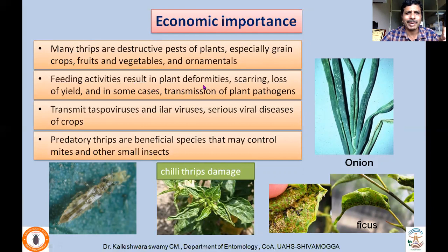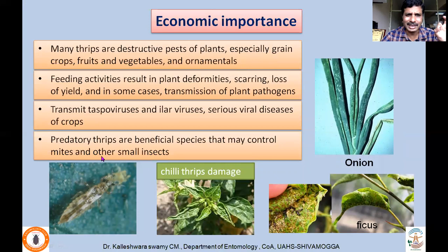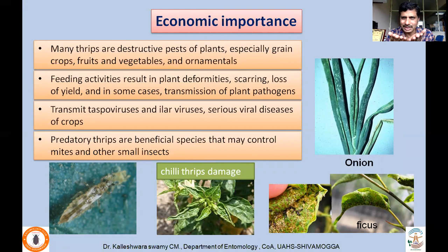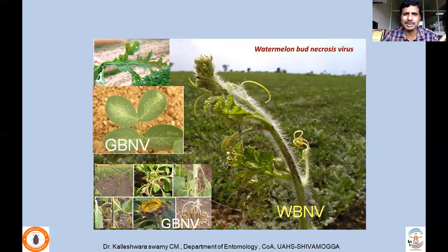Feeding activities result in plant deformities, scarring, and loss of yield. In some cases, thrips also transmit deadly plant pathogens like Tospovirus and Ilarvirus, which are serious viral diseases of crops transmitted exclusively by thrips. A few species are predatory, feeding on pest mites and other small insects, so both beneficial and harmful species of thrips exist. The characteristic upward leaf curling occurs when thrips lacerate the juice by staying between the leaf surfaces.